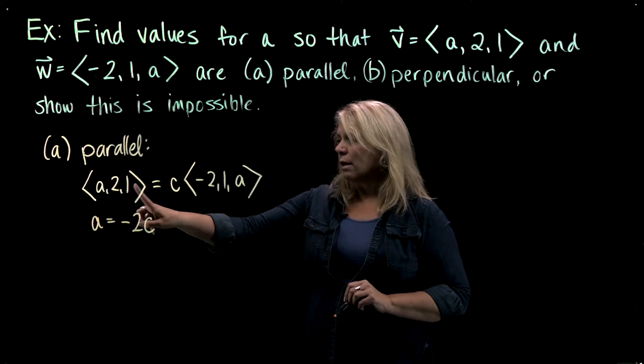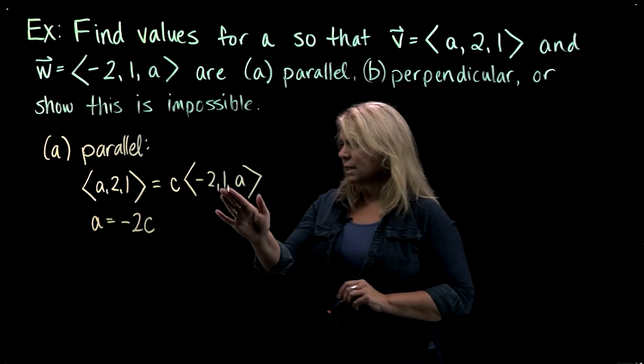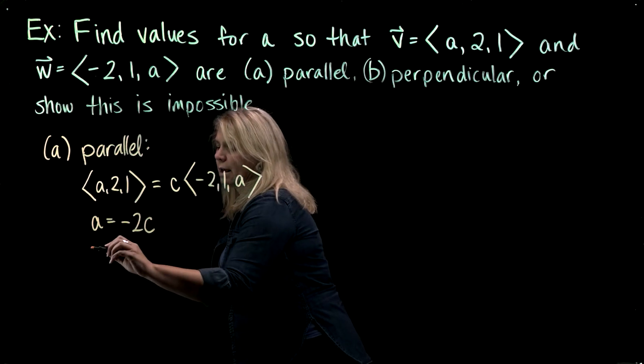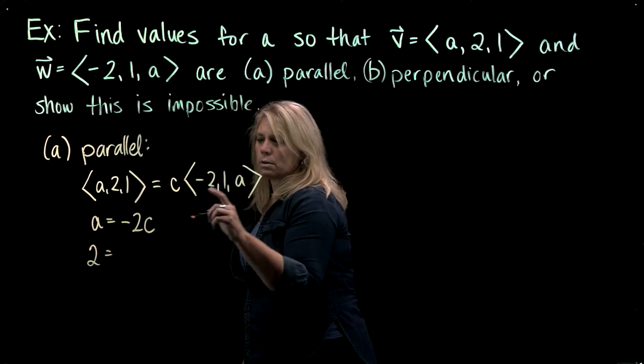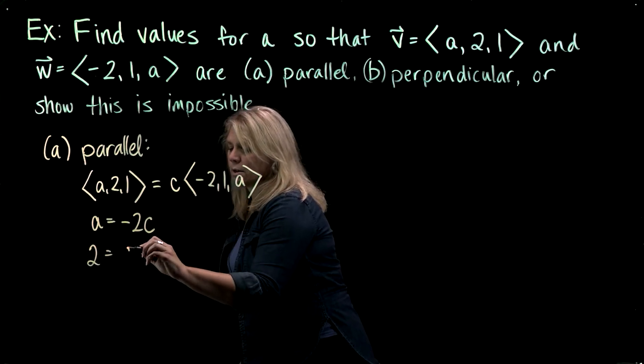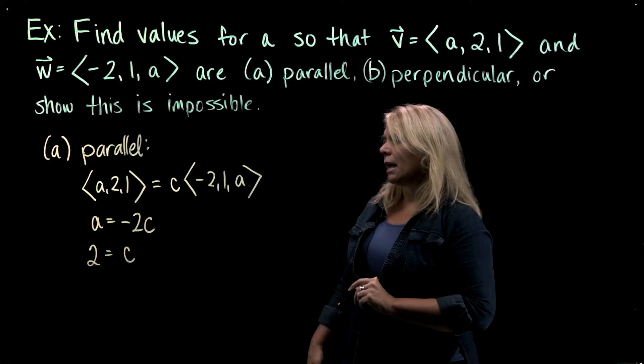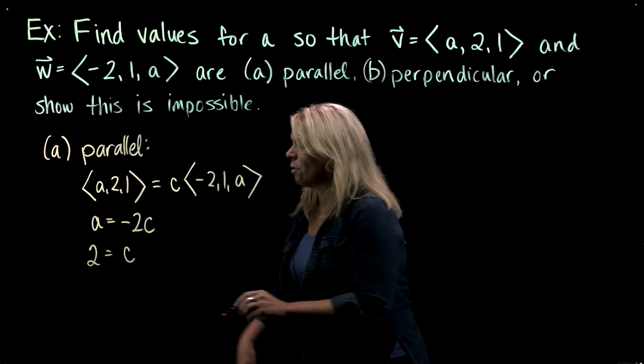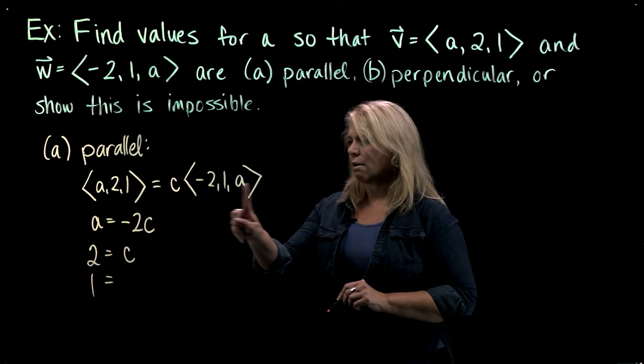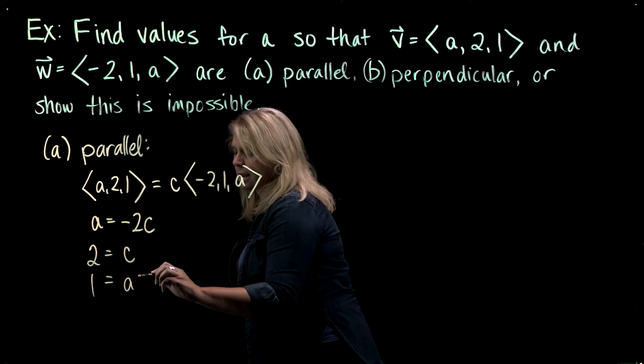And then the second components for this vector and this vector would have to be equal to each other, so I would have 2 equals 1 times C, so C. And then the third component, I would have 1 equals, and then over here, I would have AC.